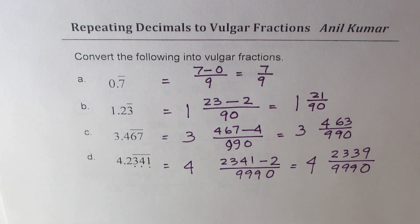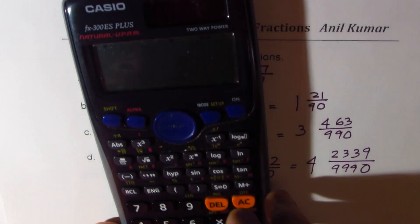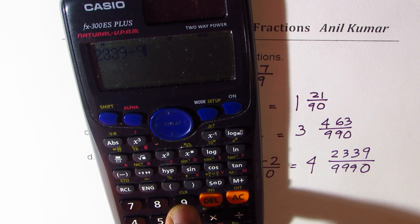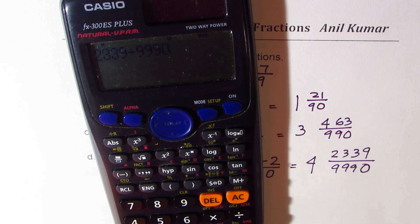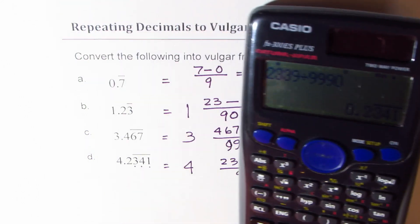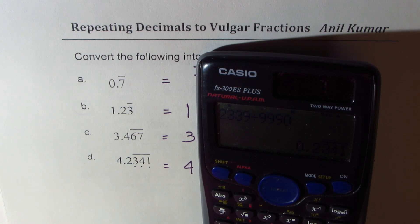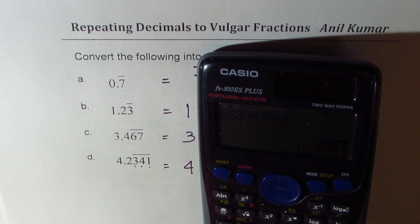So in decimals we get this as 2341 recurring. Do you see that part? 2341 recurring, so that is how you get your answers.